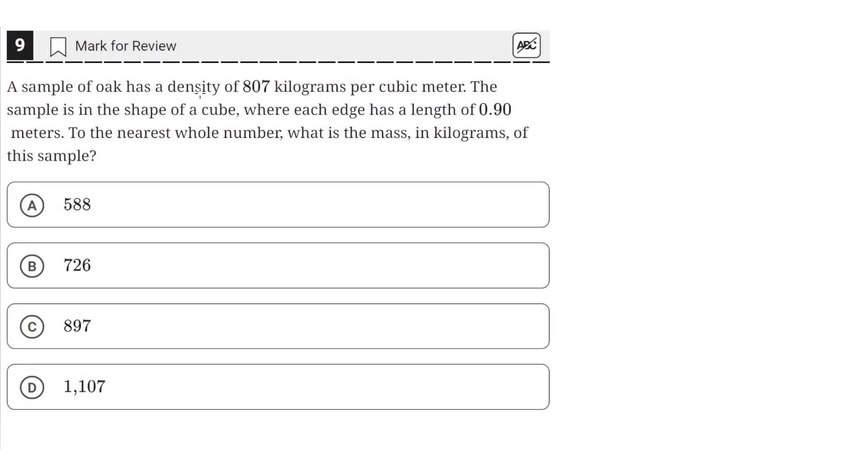A sample of oak has a density of 807 kilograms per cubic meter. The sample is in the shape of a cube, where each edge has a length of 0.9 meters.